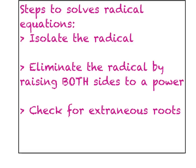So how do we go about solving these equations? Well, take your time and copy these few steps down. Step number 1, we want to isolate the radical — basically, we want to get the radical by itself on one side of the equation. Step 2, eliminate the radical by raising both sides to a power. And lastly, step 3, make sure that you check for extraneous roots — roots that do not work.